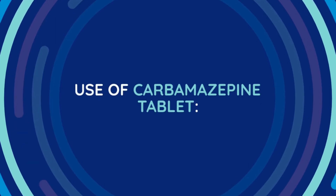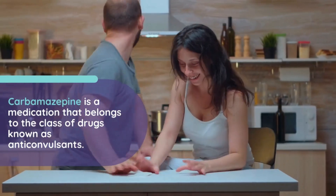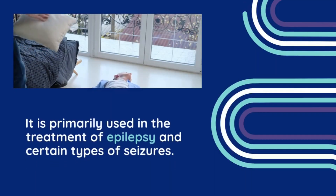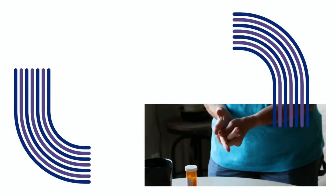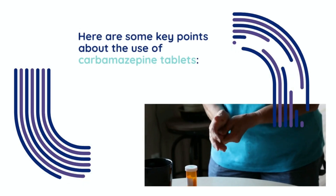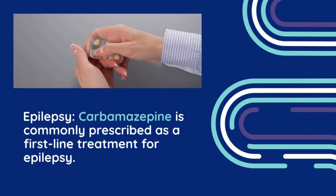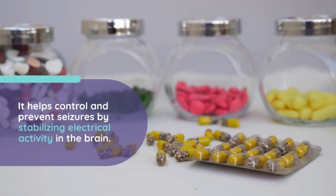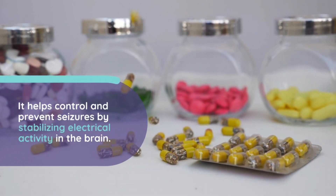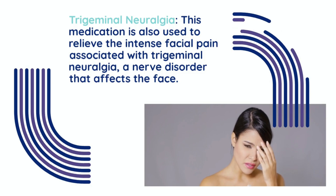Use of carbamazepine tablet. Carbamazepine is a medication that belongs to the class of drugs known as anticonvulsants. It is primarily used in the treatment of epilepsy and certain types of seizures. Carbamazepine is commonly prescribed as a first-line treatment for epilepsy, helping control and prevent seizures by stabilizing electrical activity in the brain. This medication is also used to relieve the intense facial pain associated with trigeminal neuralgia, a nerve disorder that affects the face.